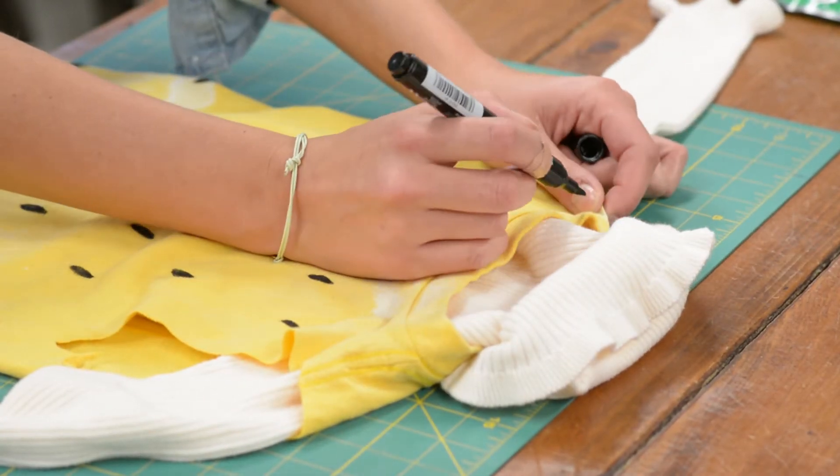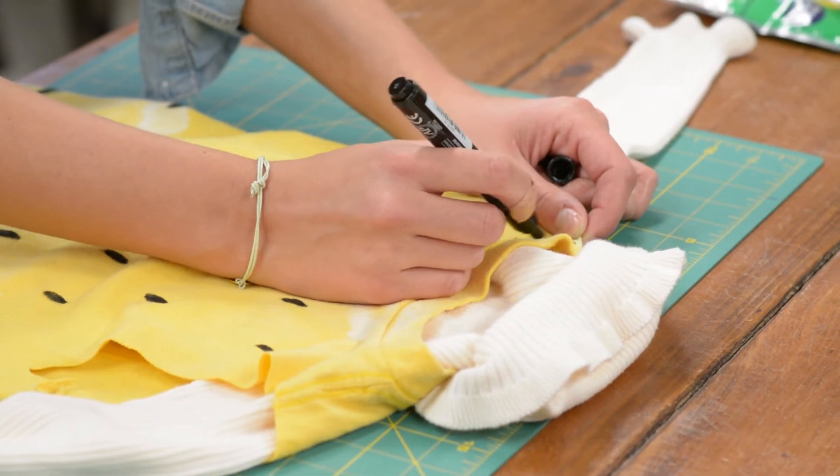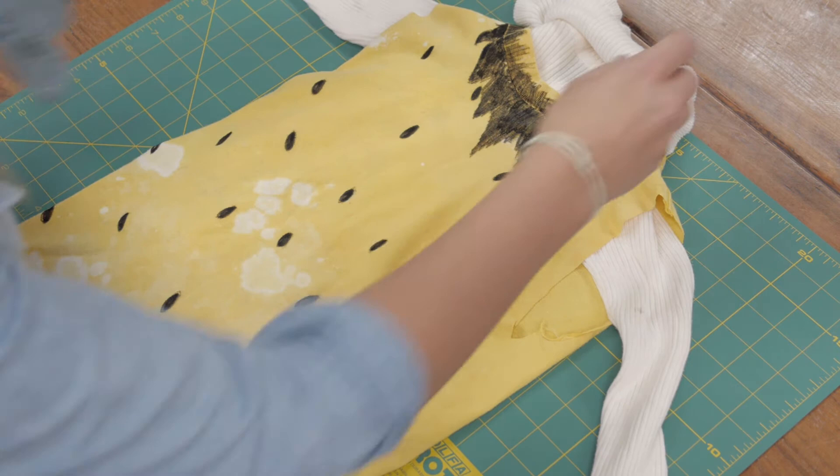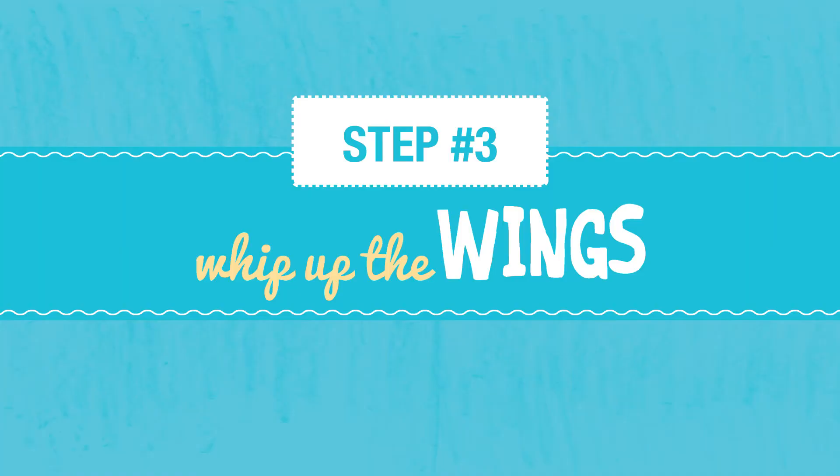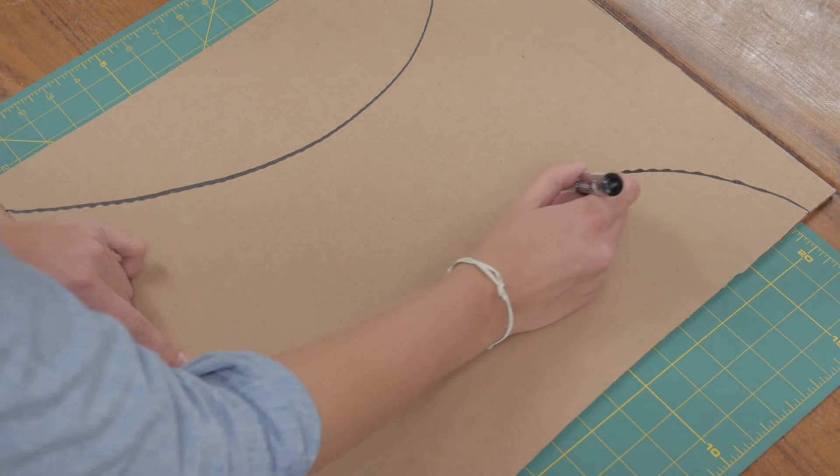To make the wings, take the cardboard and draw out two wings on either side, then cut them out.